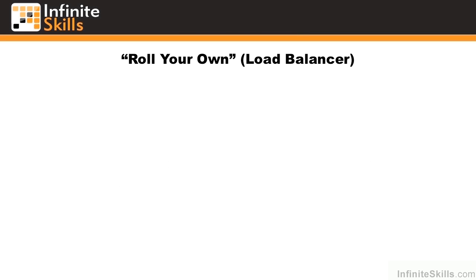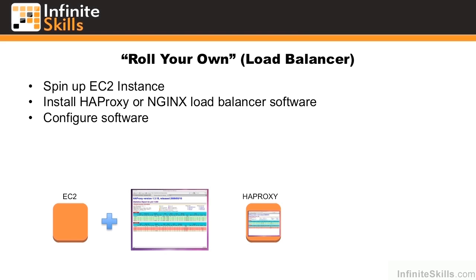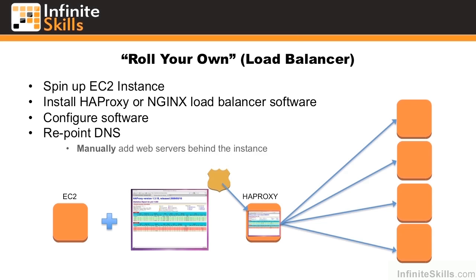Let's look at a roll-your-own load balancer and the steps involved. The first thing you do is spin up an EC2 instance. Next, choose some sort of software to provide the load balancing function — HAProxy or Nginx are common popular options. Then configure the software to run inside of the EC2, and repoint your DNS to that server. Finally, you manually add web servers behind the instance.